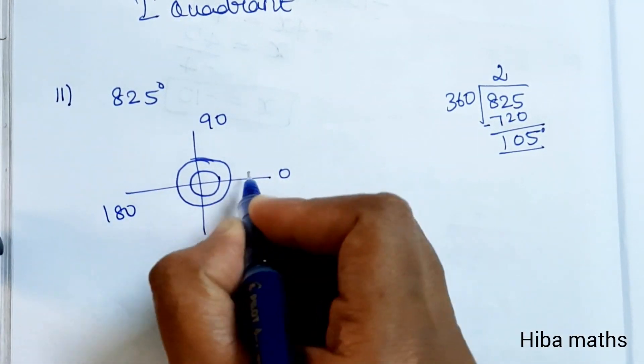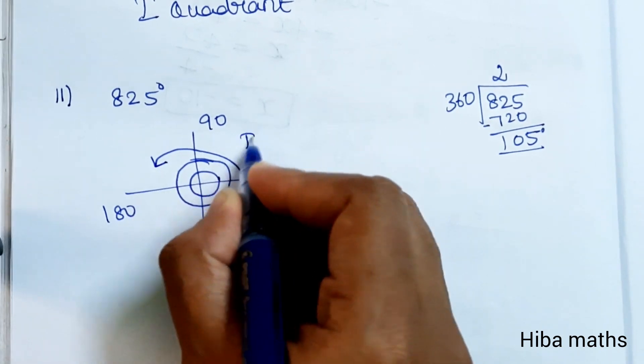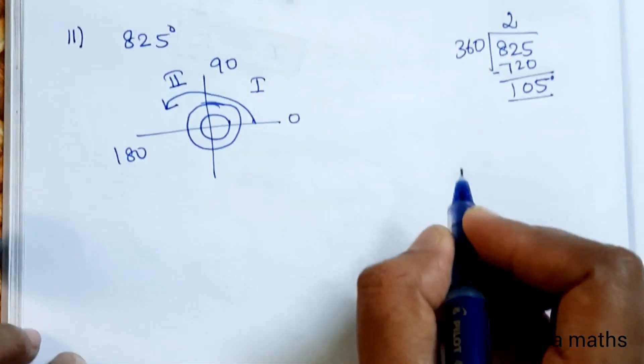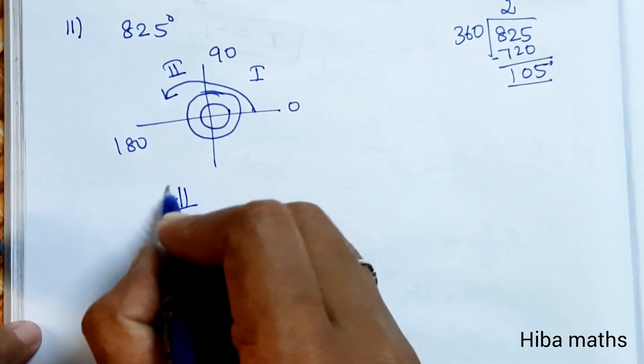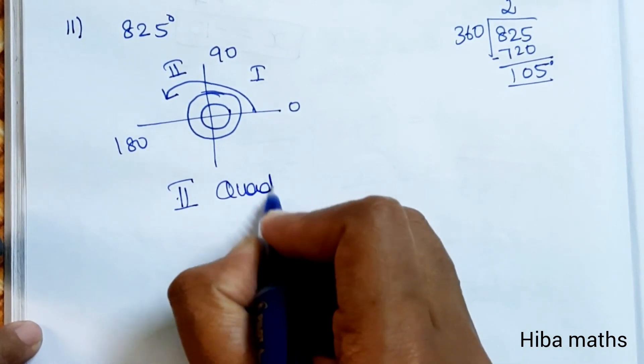This is 0°, this is 90°, this is 180°. 105° falls here between 90° and 180°. So this is the second quadrant. The answer is second quadrant.